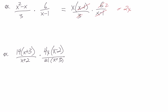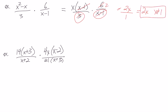The bottom everything cancels, so we could write it as 2X over 1, or just leave it as 2X. Our non-permissibles: the 3 has no non-permissible. The (X minus 1) would give positive 1, so X can't equal positive 1. And that's it for that one.